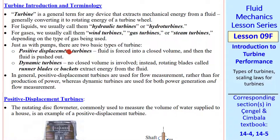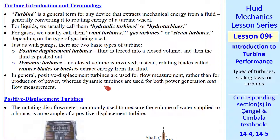Just as with pumps, there are two basic types of turbine: positive displacement turbines and dynamic turbines. These are similar to pumps, except for turbines the rotating blades are called runner blades or buckets instead of impellers. In general, positive displacement turbines are used for flow measurement, not for power production. Dynamic turbines can be used for either.